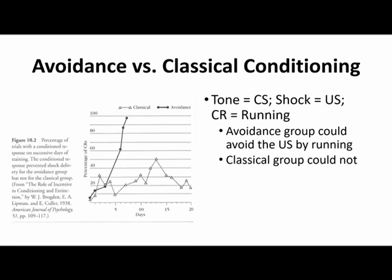To illustrate the difference between standard classical conditioning and this avoidance setup, we can look at an experiment with guinea pigs running in wheels — a rotating wheel apparatus. A tone served as the conditioned stimulus presented before a shock, which was the unconditioned stimulus, and the conditioned response would be to run. In the classical conditioning group, shown as open triangles, the tone would precede the shock and the shock would occur no matter what. The response to being shocked would also be to start running, and we see a fairly consistent amount of running behavior.